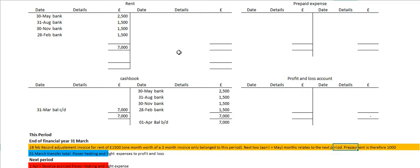So we need to make a prepayment of £1,000. Prepayments always make income and expense accounts smaller, so therefore what we're going to do is make the rent account smaller — we're going to make our adjustment for the prepayment of £1,000.